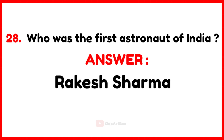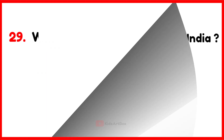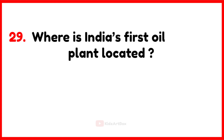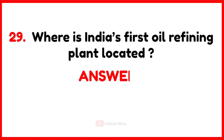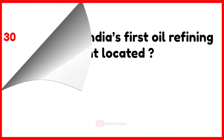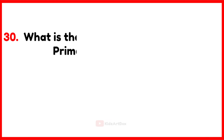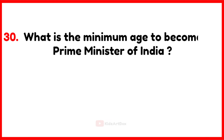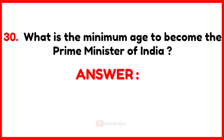Who was the first astronaut of India? Rakesh Sharma. Where is India's first oil refining plant located? Digboi, Assam. What is the minimum age to become the prime minister of India? 25 years.